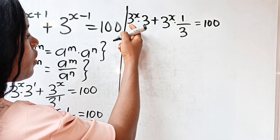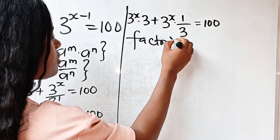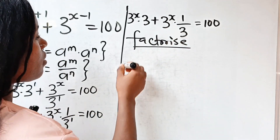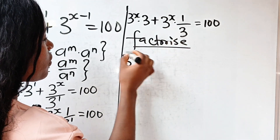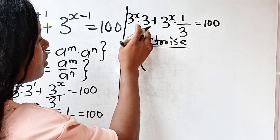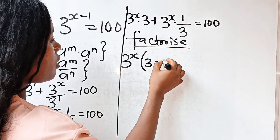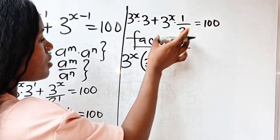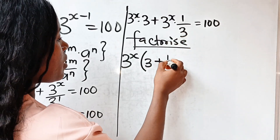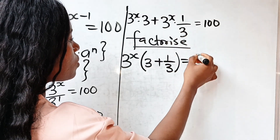We are going to factorize 3 to the power of x. So if we do that, we have 3 to the power of x in brackets. When the first term is divided by 3^x, we have 3. Plus, when the second term is divided by 3^x, we have 1 over 3 remaining. This is equal to 100.